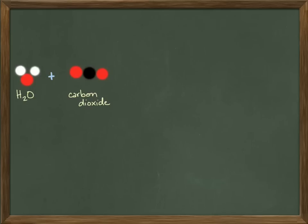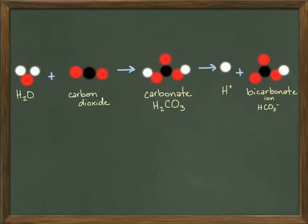starts with water and carbon dioxide. Those together yield—that's what the arrow means—carbonate, and carbonate can yield bicarbonate ions and a hydrogen ion.